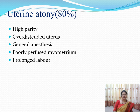Uterine atony — failure of the uterus to contract effectively — is the first T (Tone). It accounts for 80% of postpartum hemorrhage cases. It is commonly seen in multiparous women, in cases of overdistended uterus, under general anesthesia, or in prolonged labor.